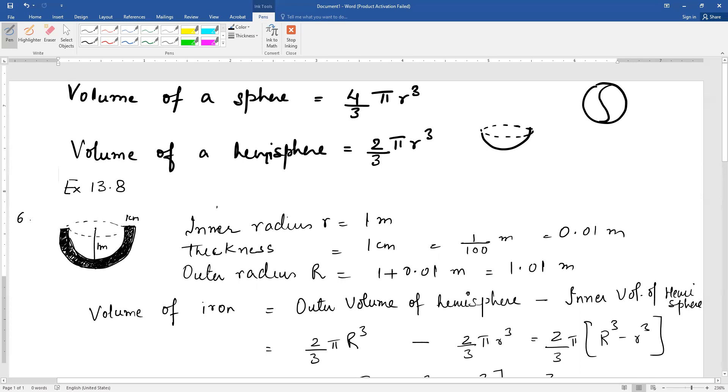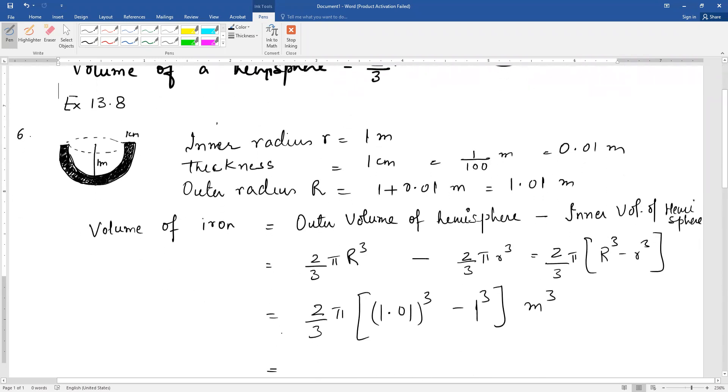Now you have to find the volume of this iron sheet. This means that the outer volume of the hemisphere minus the inner volume will give the volume of the iron sheet. The outer volume is 2/3 π R³ minus inner volume 2/3 π r³.